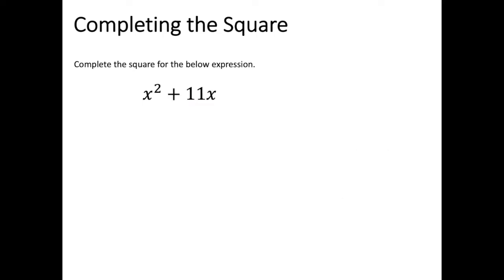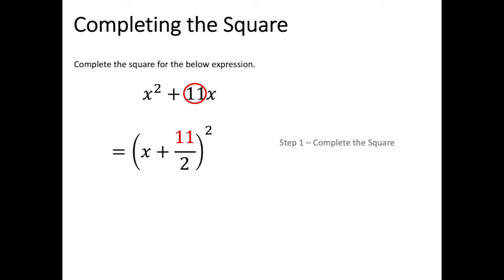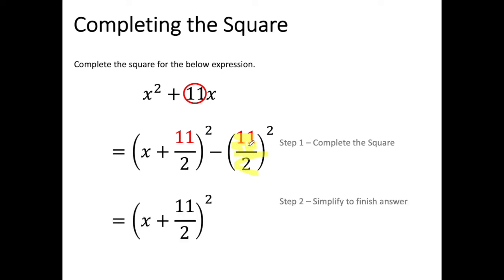Looking at one last example: x squared plus 11x. Completing the square, my b value is 11. So it is x plus 11 divided by 2, squared, minus 11 divided by 2 squared on the end. Because 11 is an odd number I cannot divide it by 2, but I can remove my last set of brackets by squaring both 11 and 2. My simplified answer is x plus 11 over 2, squared, minus 121 over 4. Those are some examples of what we mean when we say we are going to complete the square. Next we'll look at how to use this method to factorize a set of three terms.